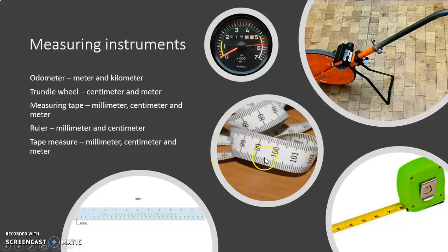Then we have our measuring tape here. These little lines are millimeters and that is a whole centimeter and it also has a few meters. Then we have our basic ruler, which is in millimeters and centimeters. Some rulers also have inches.